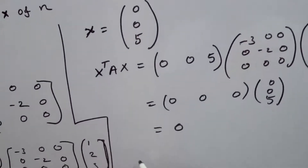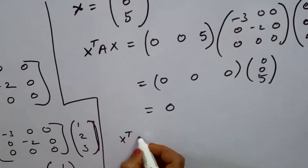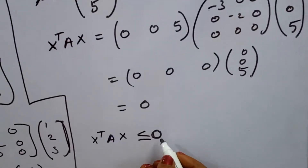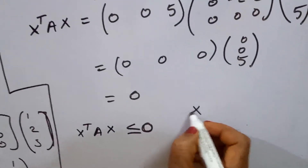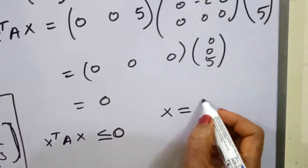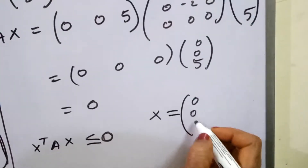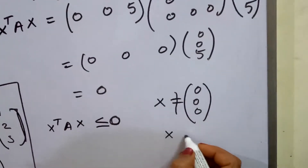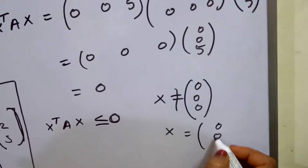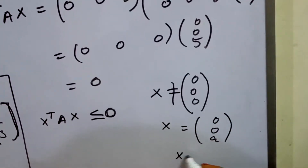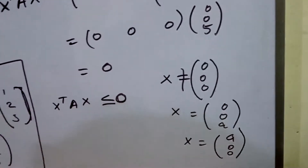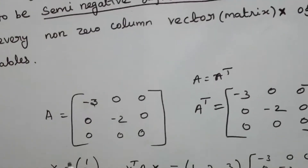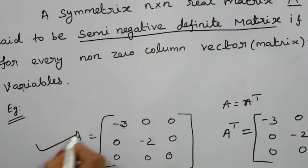The value x transpose Ax is less than or equal to 0, and we confirmed that for x = [0, 0, 5] it equals 0, and for x = [1, 2, 3] it equals minus 11. Since x is a non-zero vector and x transpose Ax is less than or equal to 0, the first condition is satisfied. Therefore A is a semi-negative definite matrix.